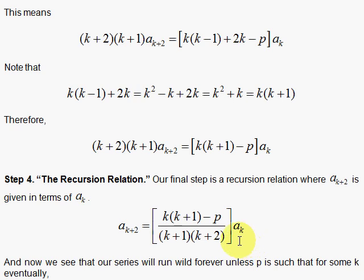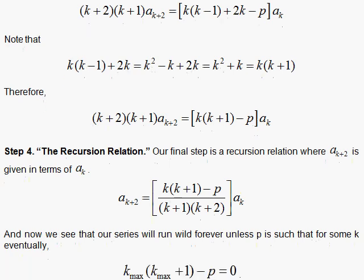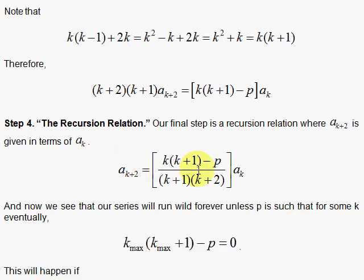Now you see here why p should be l times the quantity l plus 1 where l is some integer. The reason is that we do not want to have our series go forever. If our series goes forever, then we get a blow-up effect in quantum mechanics. That's not good. And so the quantum mechanics, you know, the physics would tell us here that p needs to be equal to something so that when I reach some k maximum, I get killed off.